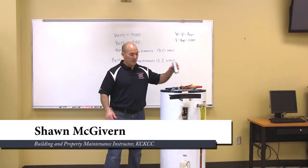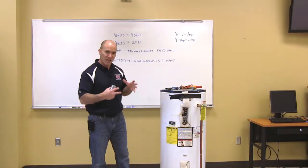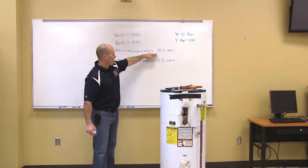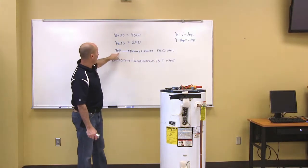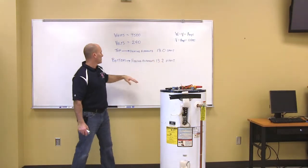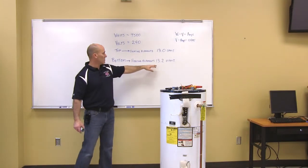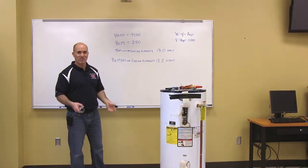Okay, so now we have disconnected the upper and lower heating elements. We've tested them and found two readings on the heating elements. The top heating element was 13.0 on the ohms reading, and the bottom heating element was 13.2 on the ohms reading, and ohms is resistance.